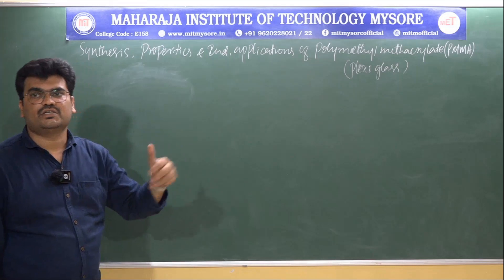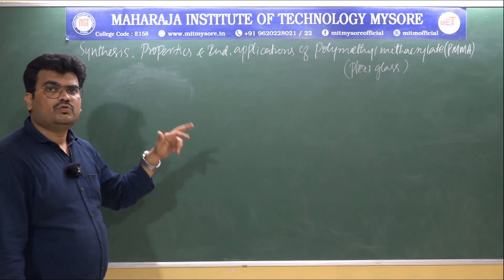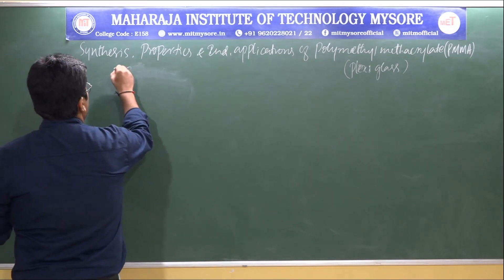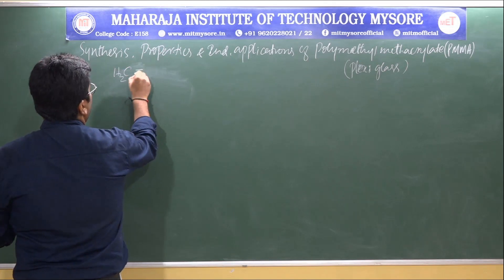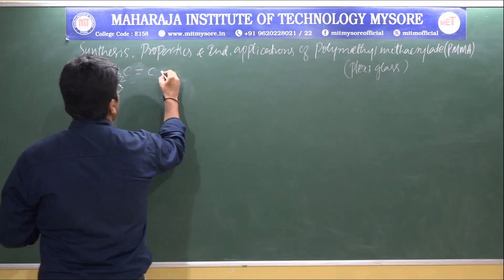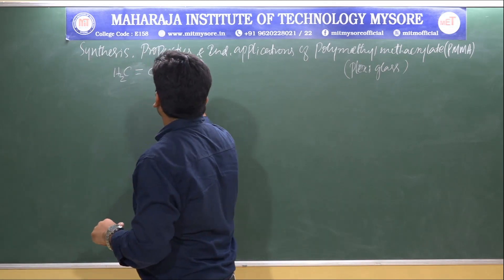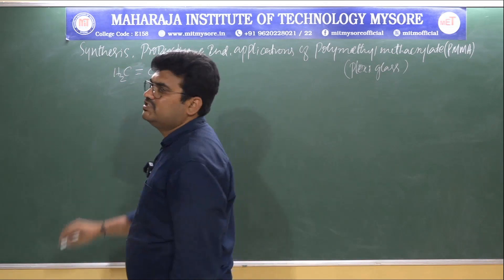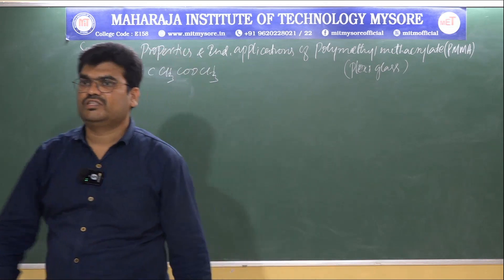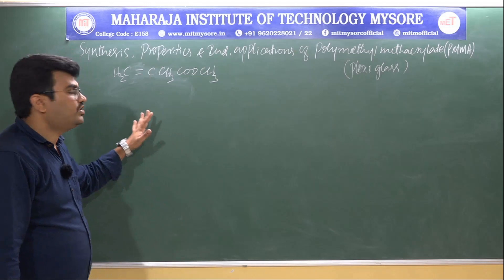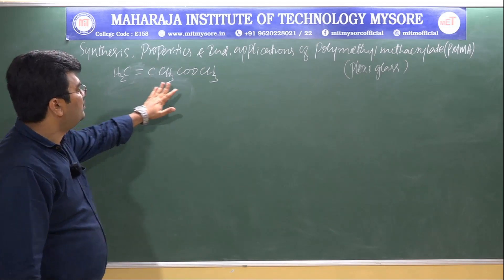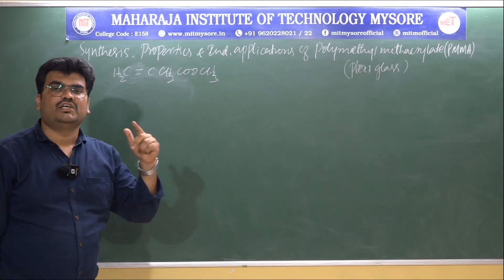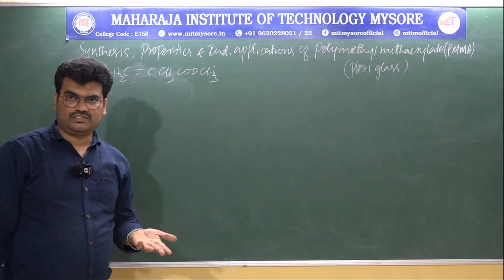PMMA is made from methyl methacrylate (MMA), which has the structure CH2=C(CH3)–COO–CH3. It is prepared by emulsion polymerization at 60 to 70°C in the presence of hydrogen peroxide (H2O2) as an initiator.